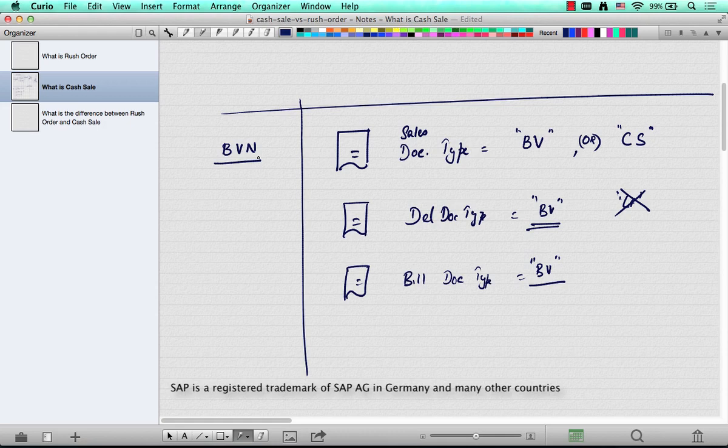For starters, the billing relevance. This is the key difference. Billing relevance. The billing relevance for a TAN or standard item category is always delivery relevant billing. There are some item categories like TAD, service items, which have order relevant billing. But for standard deliverable items, it's always delivery relevant billing.